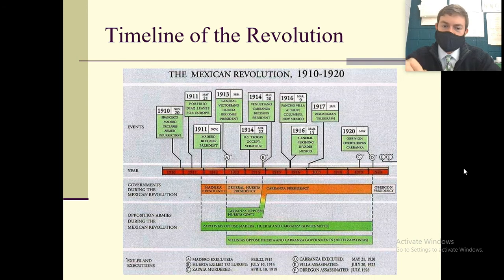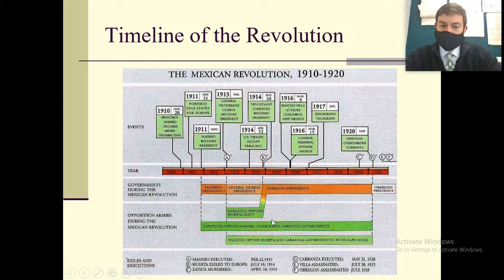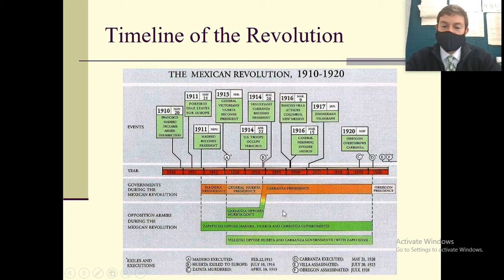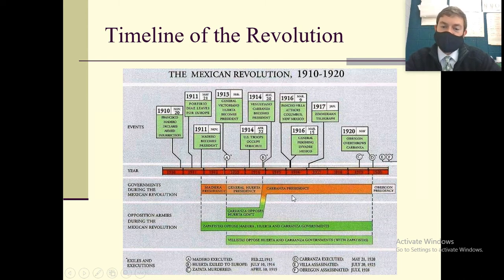Here's the timeline. The top part covers all the different events we just talked about. But the bottom part gives you a good visual: you had Díaz as president, then people started opposing him. Madero said overthrow him, so he becomes president. The Zapatistas and Villistas come in and start opposing Madero — Madero gets overthrown, Huerta becomes president. Then Carranza, the Zapatistas, and the Villistas all oppose Huerta — Huerta gets overthrown, Carranza becomes president. The only people consistent throughout are the Zapatistas and Villistas. They oppose everybody pretty much the whole time.